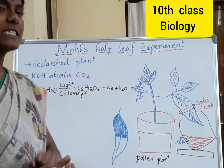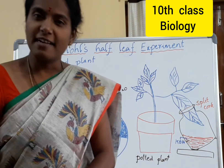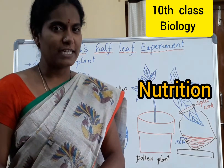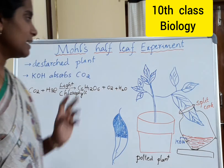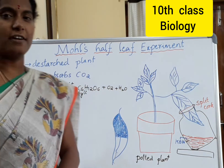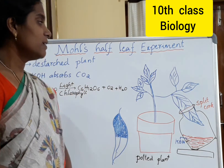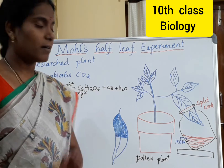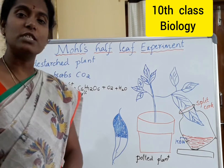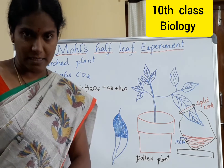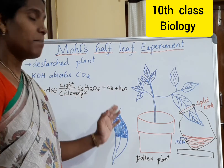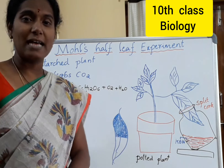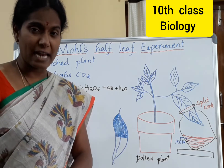What is the first chapter in 10th class? That is nutrition. In that chapter, what we have to read is how nutrition is carried out in different living things like plants, animals, as well as in the lower organisms.